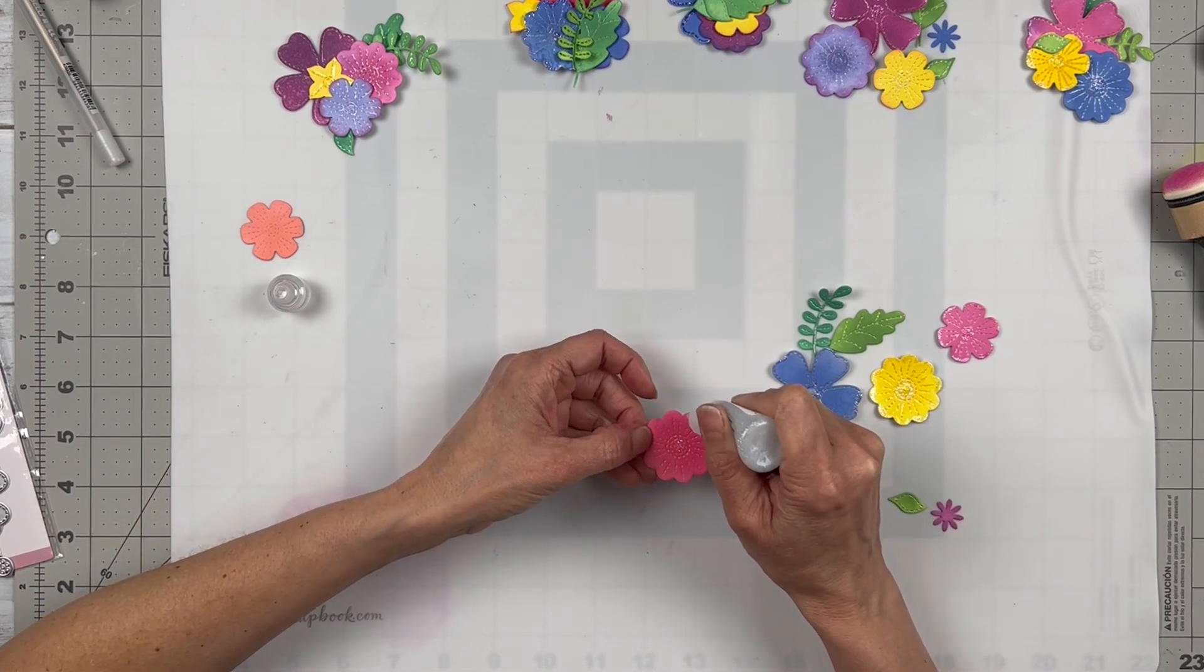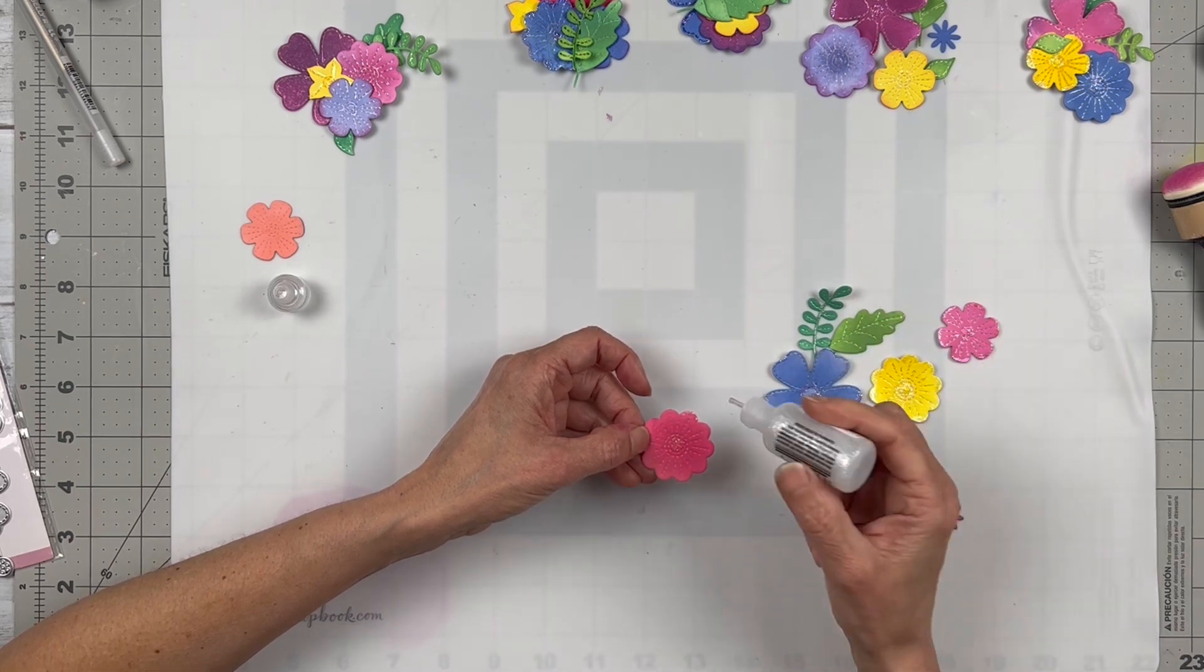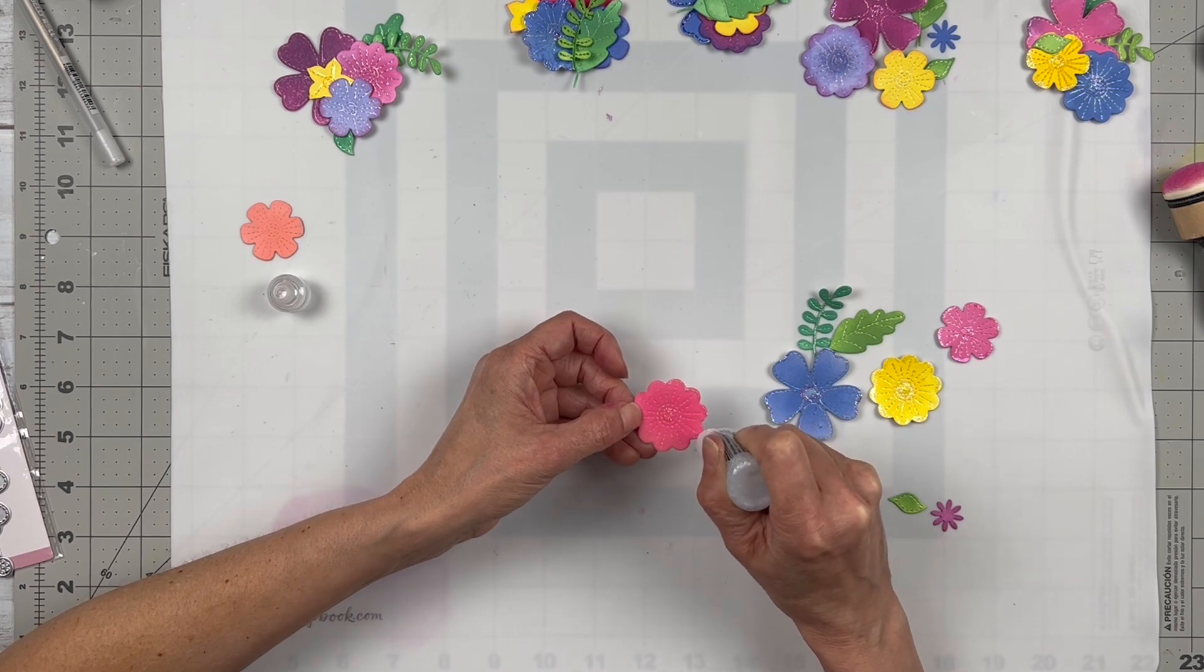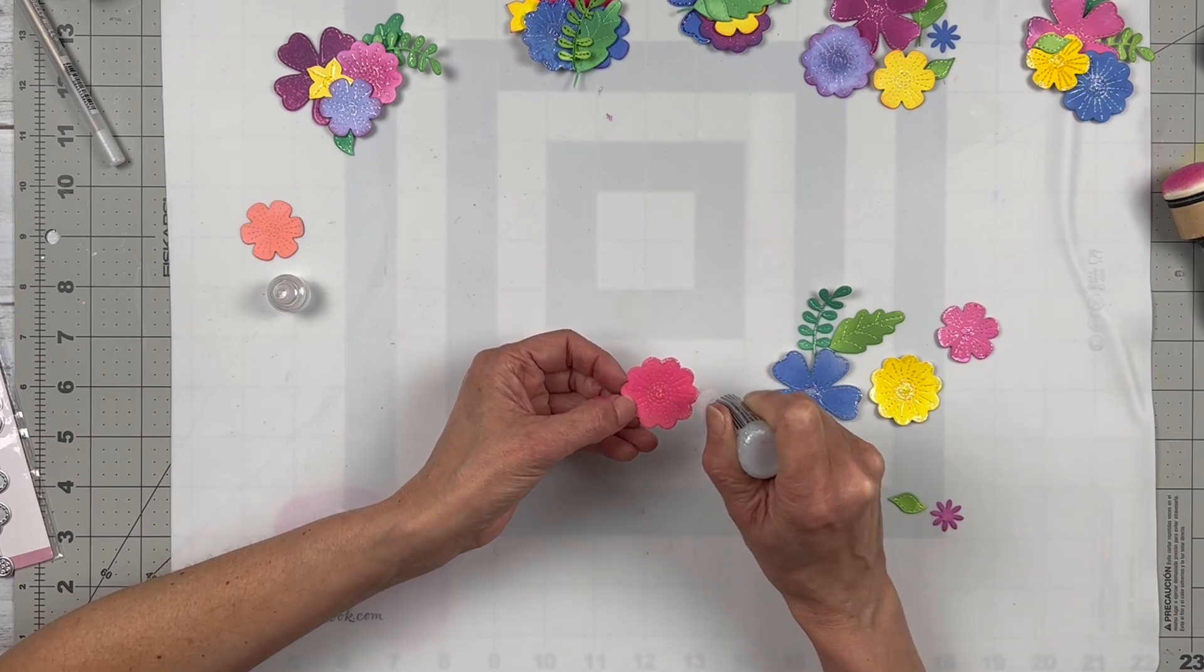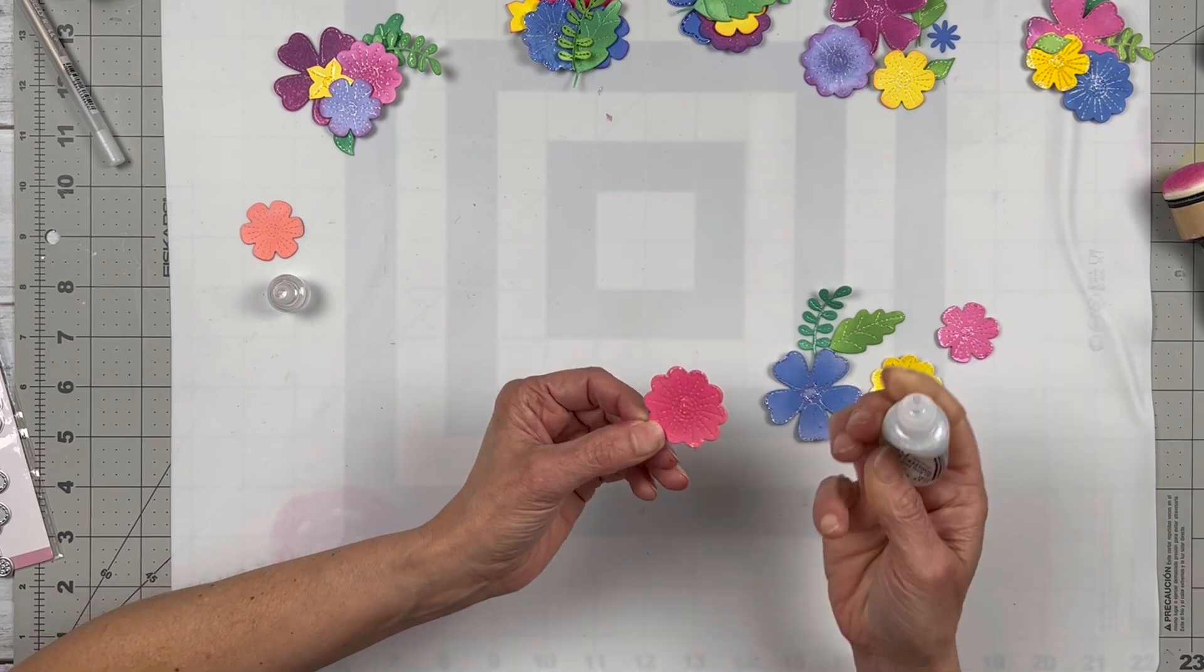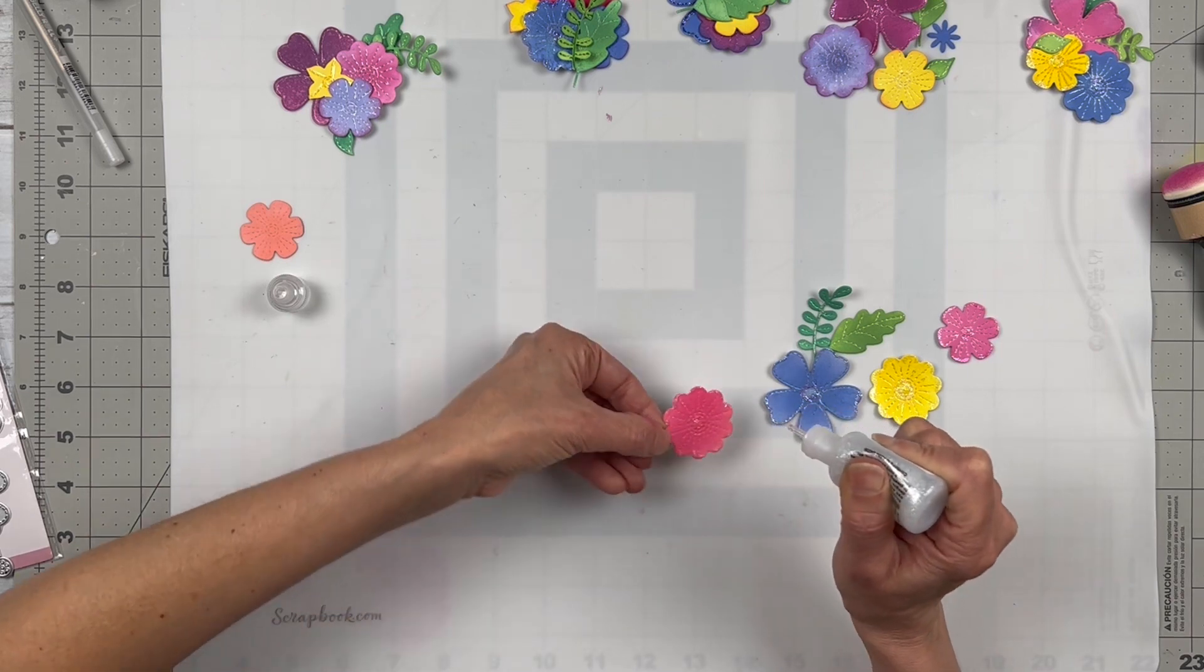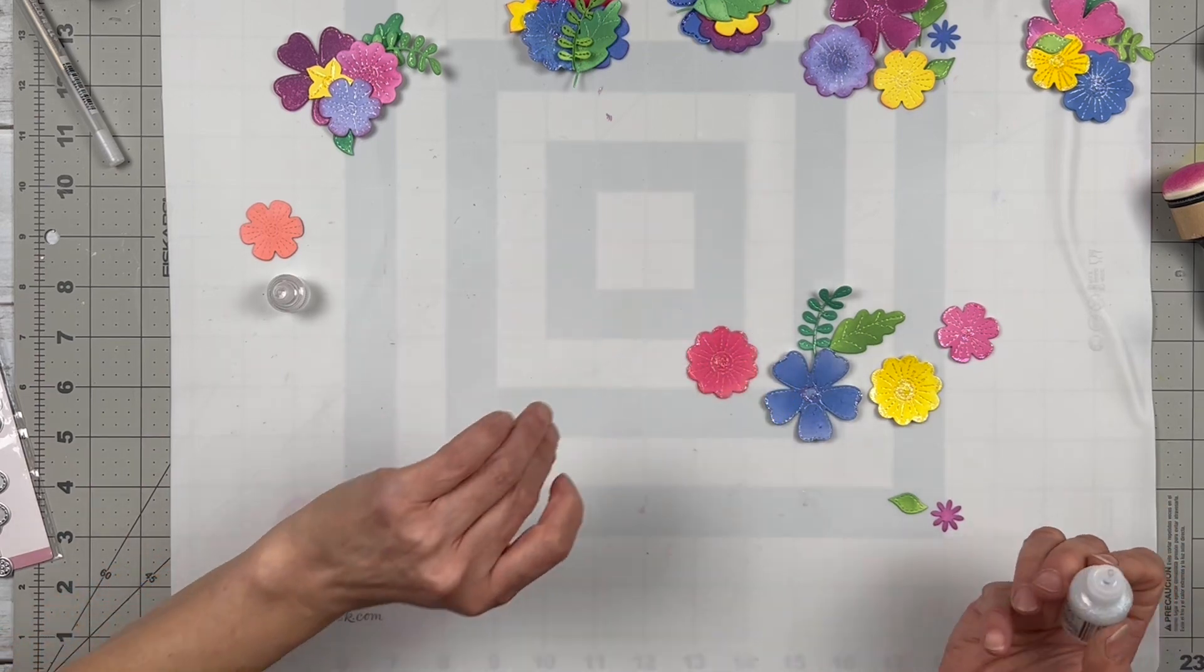I took my Stardust Stickles and I'm just going to go around the edges for a little more sparkle and shine. I used really really bright tones on these which is beautiful and remind me of the tropics.